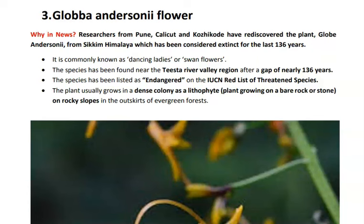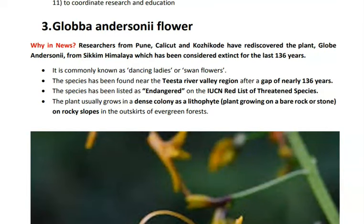The flower is known as Globba andersonii and has been found in the Sikkim Himalayas near the Teesta River. Key points: its location is Sikkim Himalayas, and it has been rediscovered after 136 years. It has been listed as endangered on the IUCN Red List.